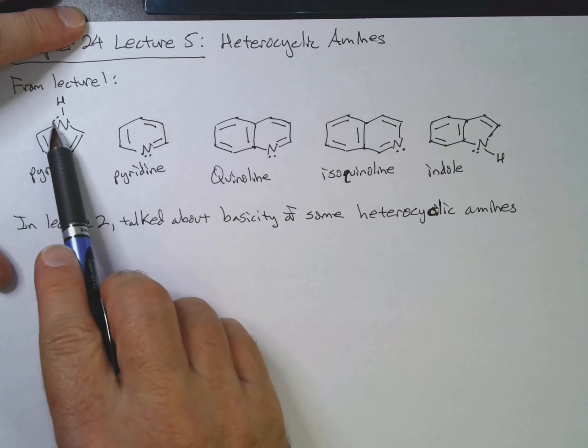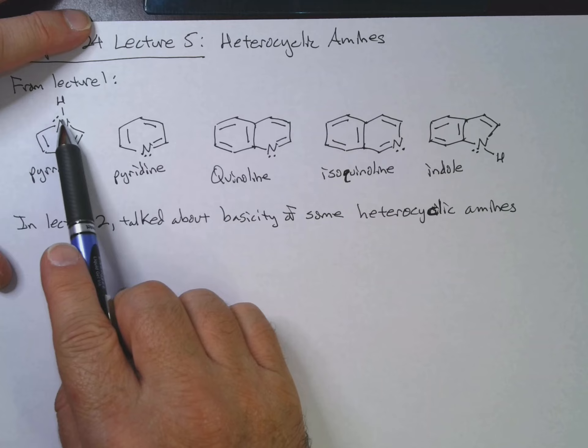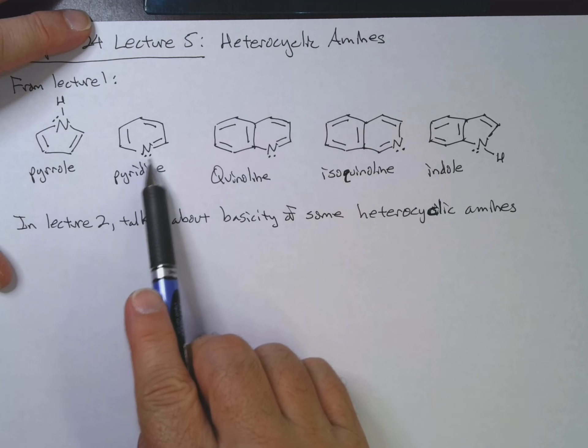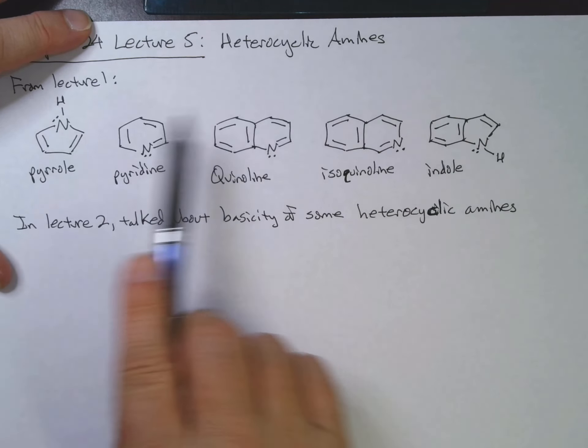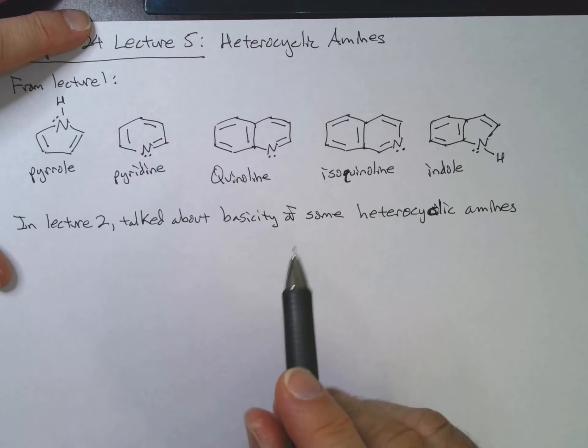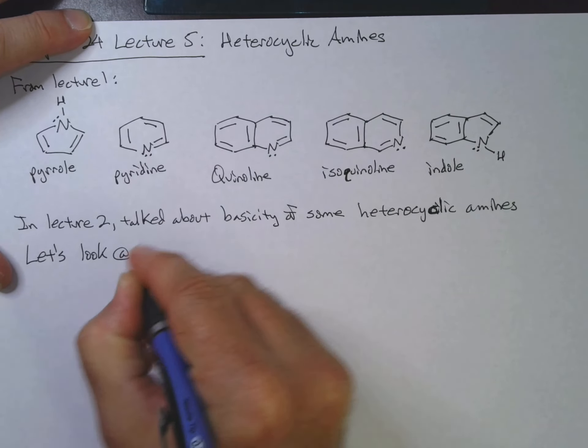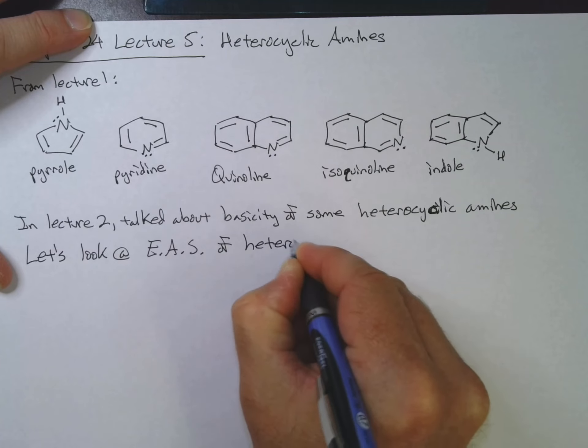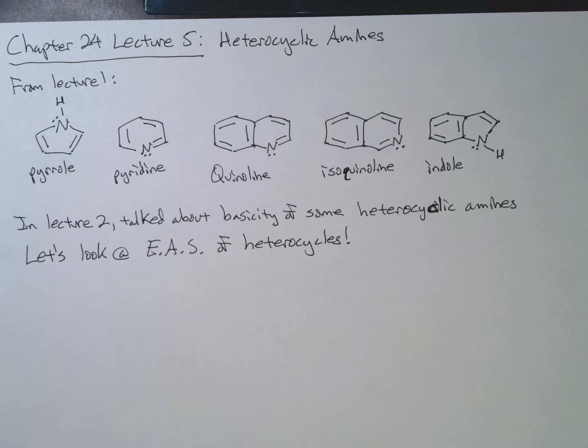We mentioned how pyrrole, because if you protonated it disrupts the aromaticity, pyrrole is a very weak base. Pyridine, not so much, but it's because we've got an sp2 orbital for that lone pair. Quinolin would be similar and isoquinolin. Indole would be more like pyrrole in terms of protonating. Now today, let's look at electrophilic aromatic substitution of heterocycles.